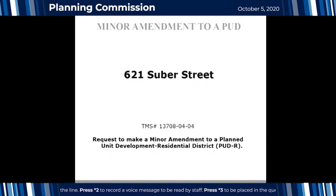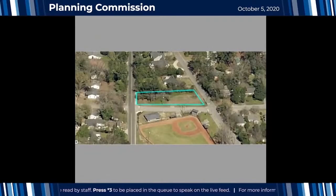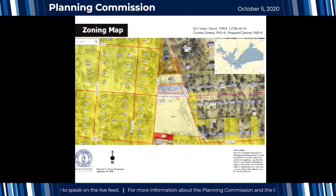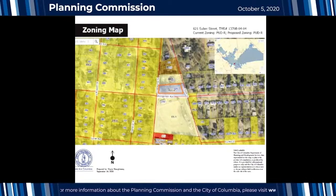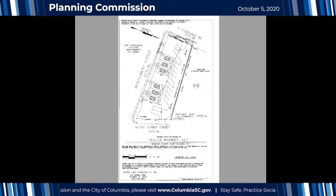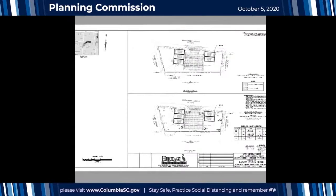The first regular agenda item is a request to make a minor amendment to a planned unit development residential at 621 Subaru Street. Rachel Bailey introduces the case. The PUD was originally approved in 2007 for a six-unit townhome development. The original site plan and the new site plan are included in the packet. The townhomes would be roughly 1,200 square feet and two stories, with a one-way drive approved with entrance on Subaru and exit on South Kilbourne. The applicant is now working to develop the site but has encountered a hiccup.